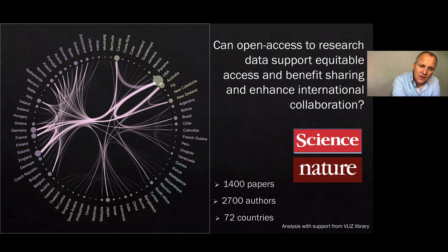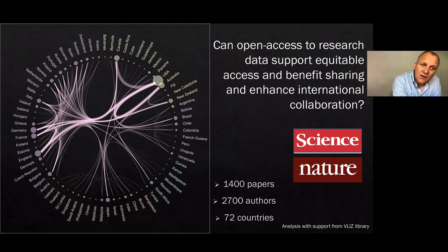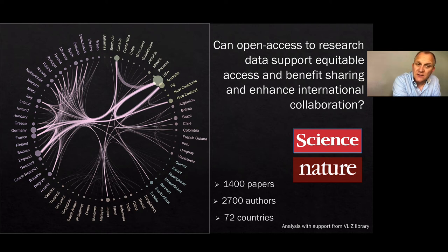We did an analysis on which countries make the most use of OBIS. We looked at the country affiliations of the co-authors and made a graph showing how scientists are collaborating to produce papers together. You can see a lot of collaboration with European countries, also between Europe, the US, Australia, New Zealand, and Canada. There's less collaboration with the Global South, but it's not non-existent. That's certainly an area where we need to invest more and build more capacity.